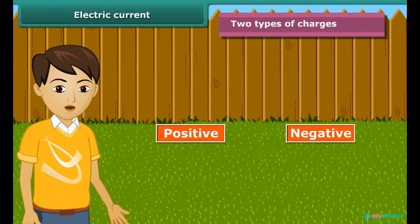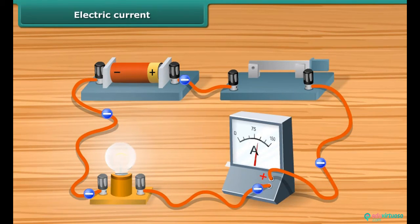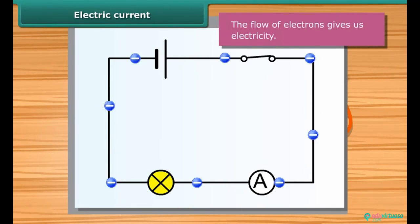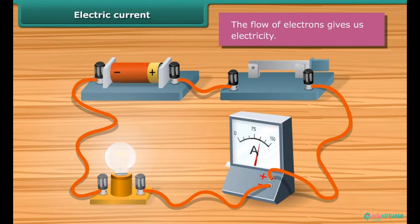The moving or flowing charges produce an electric current. An electric current consists of a movement of negative charges, that is, electrons. The flow of electrons gives us electricity. Electric current is measured by an ammeter.